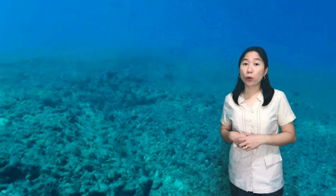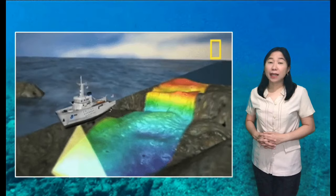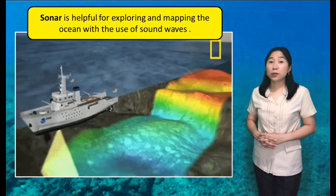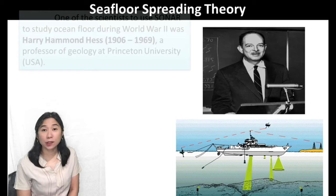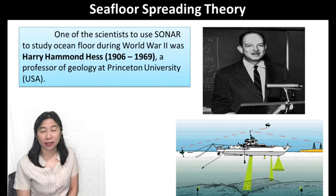Many people in the past believed that the ocean floor is flat like the desert. But in the 1930s, when sounding equipment called sonar was developed, it led to the discovery of outstanding features of the ocean floor. One of the scientists to use sonar to study the ocean floor during World War II was Harry Hammond Hess, a professor of geology at Princeton University.